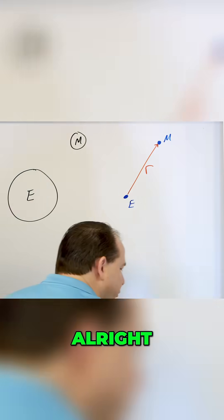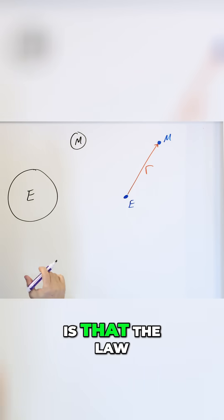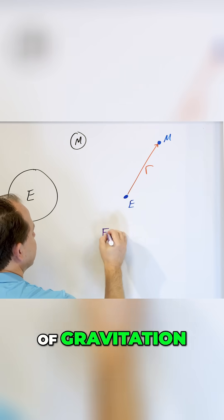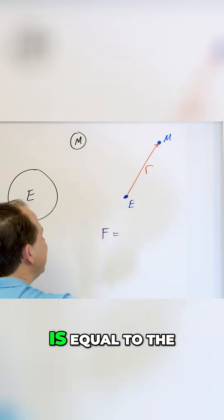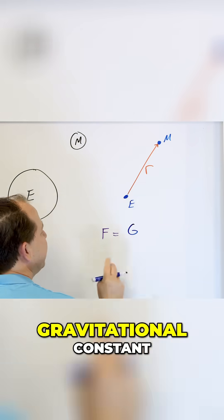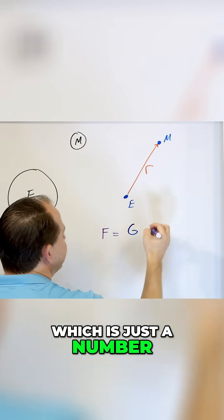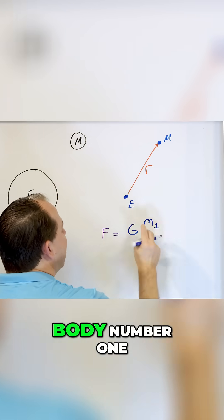That's a complete myth. What I want to point out to you is that the law of gravitation, the force between any two objects, is equal to the gravitational constant, which is just a number, times the mass of body number one,